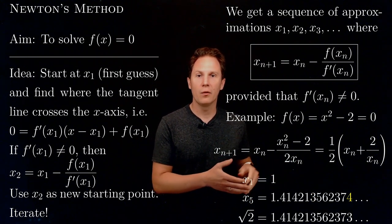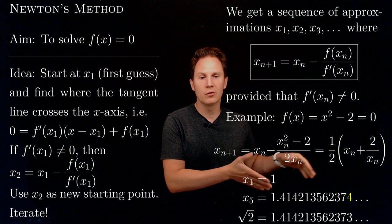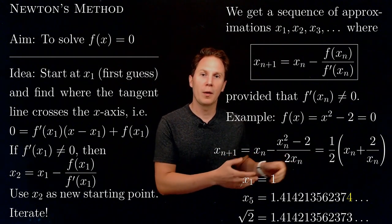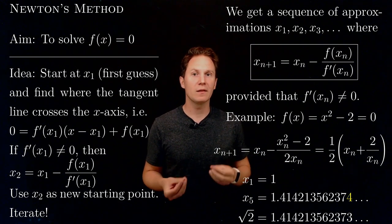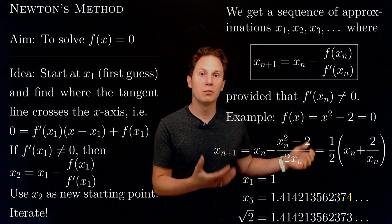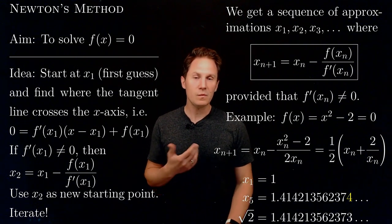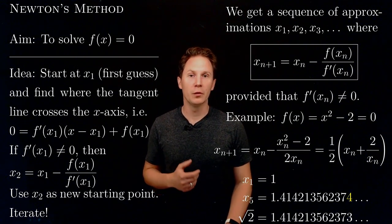So you can see how practically at each successive approximation, the number of correct decimal places seems to double at least. So this is quite a powerful method.